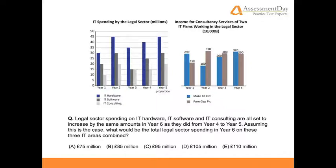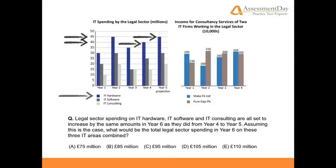Let's start with IT hardware and look at the graph. IT hardware is the dark blue. We can see year 4 reaches 40, and year 5 reaches 45. Therefore, this is a £5 million increase: 45 minus 40 equals 5.